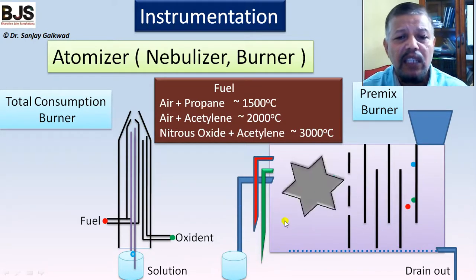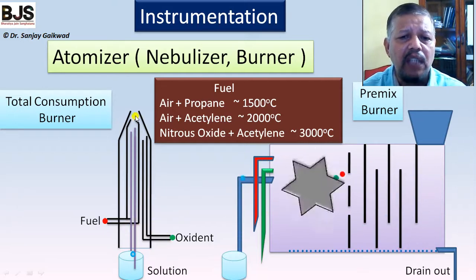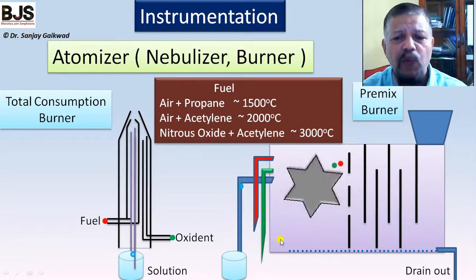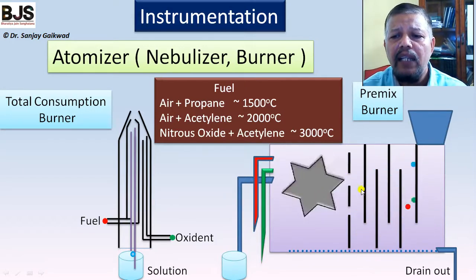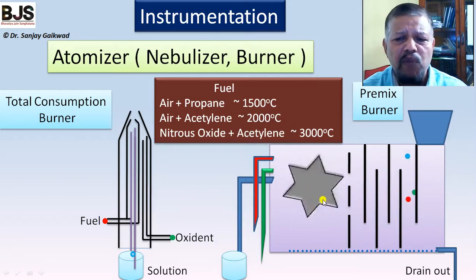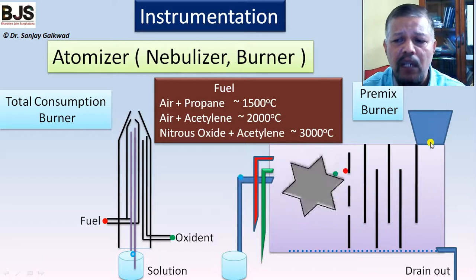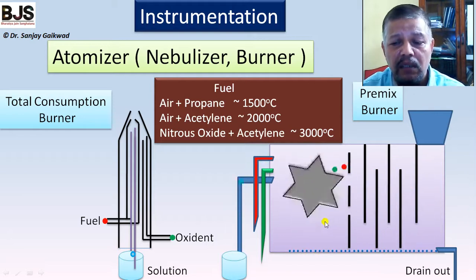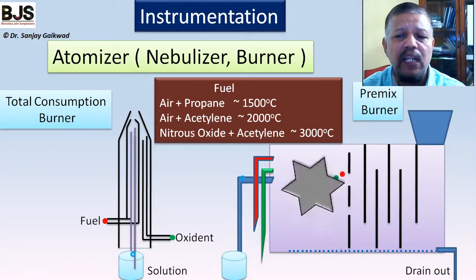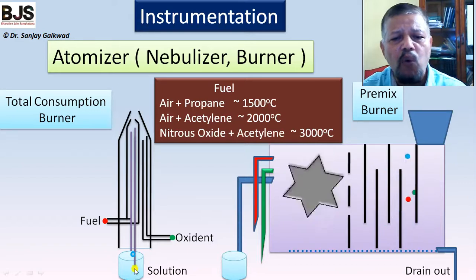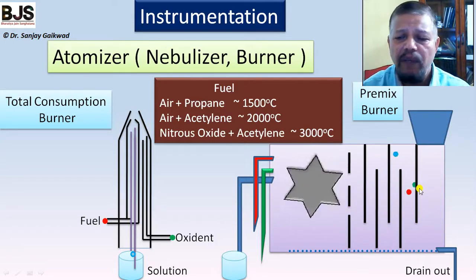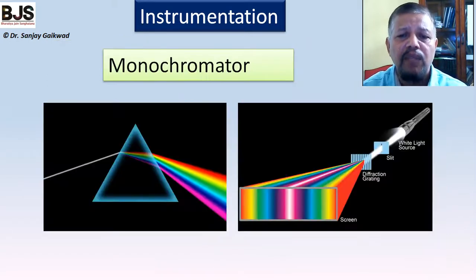In the premix burner, the fuel, solution, and oxidant are first mixed together using a chopper, then the resulting fine droplet fog passes to the burner. About 70% of the solution is drained out, but the efficiency is increased and we get more accurate analysis. Unlike the total consumption burner, the premix burner does not affect the flame temperature, so we get consistent temperature and better absorption results.